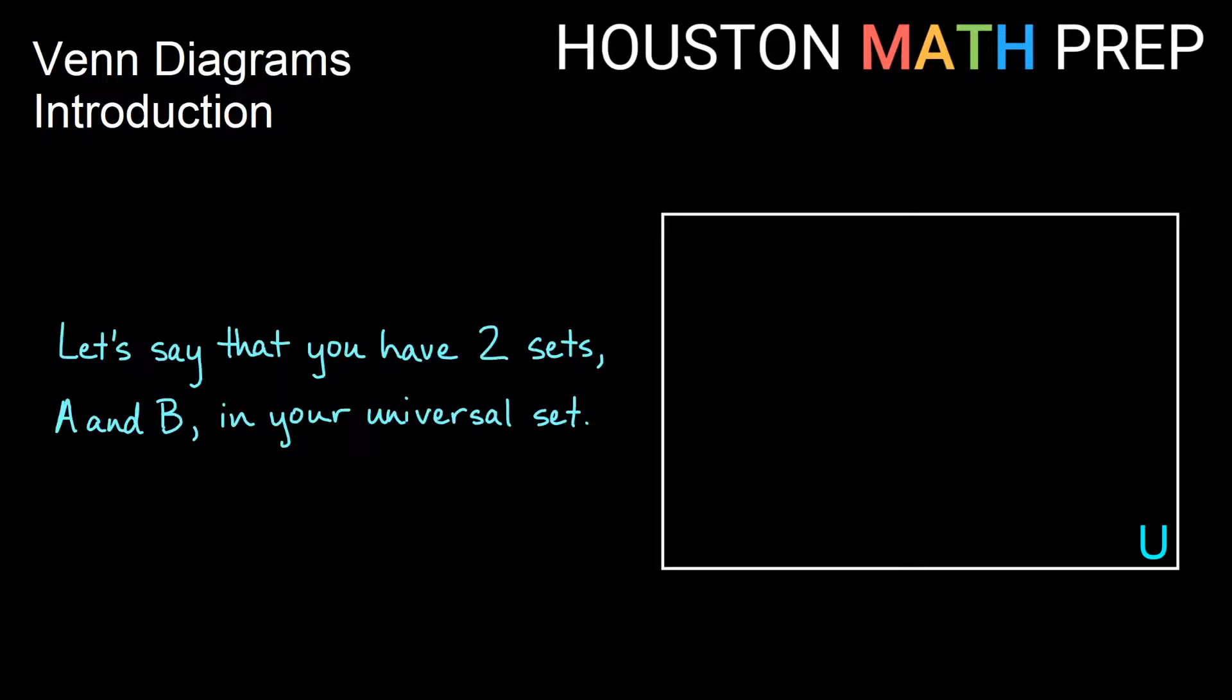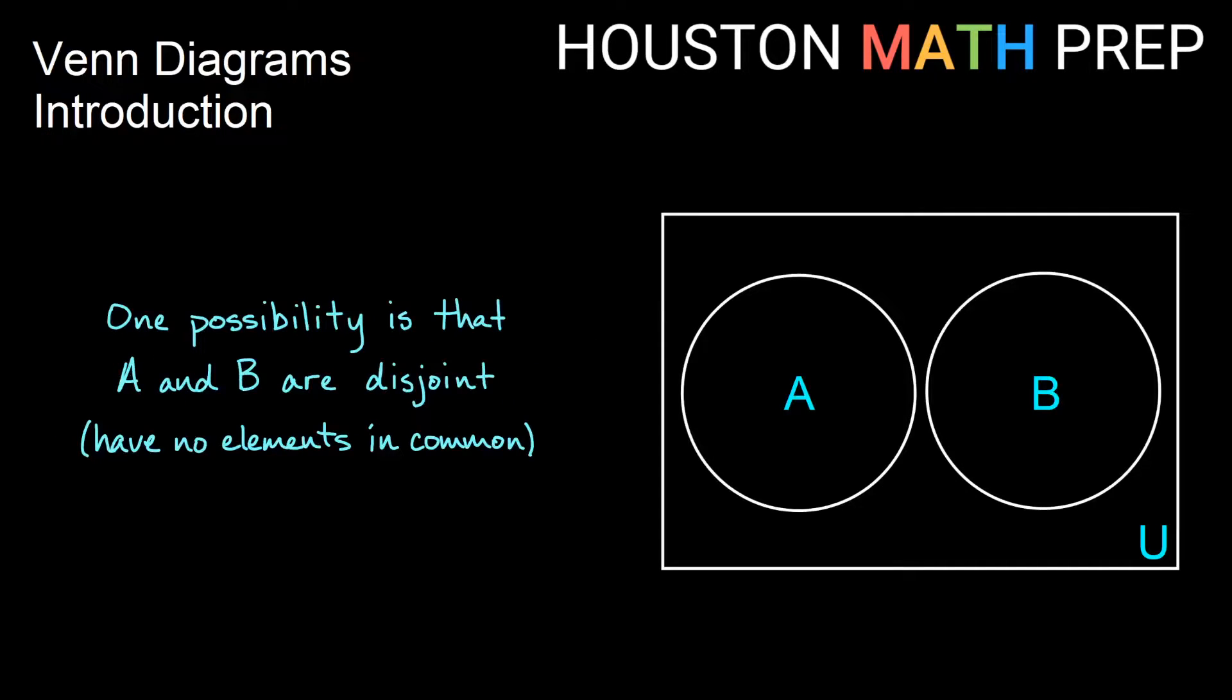There's a couple of possibilities of how they might look together. One possibility is that they're disjoint. They have no overlap, there's nothing in common, no elements in both sets A and B.